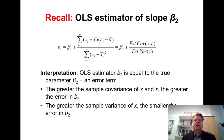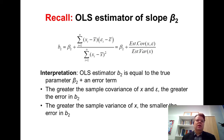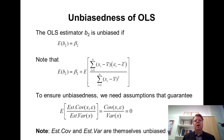To examine the bias or unbiasedness of the OLS estimator, recall the result proved in the previous lesson: the OLS estimator for B2 can always be rewritten as the true beta 2 plus an error component, where this error component consists of the sample covariance of X and epsilon divided by the sample variance of X. We can utilize this result to examine unbiasedness.